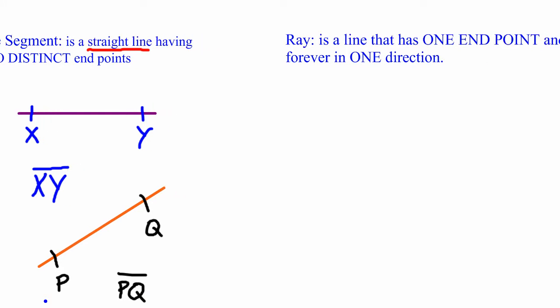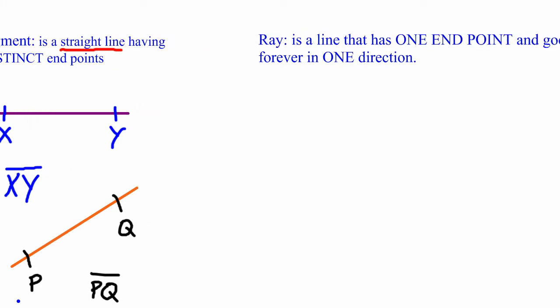The next important point that I would like to look at now is what we mean when we're speaking about a ray. Basically a ray is a line that has one end point and goes forever in one direction, and that's pretty simple.